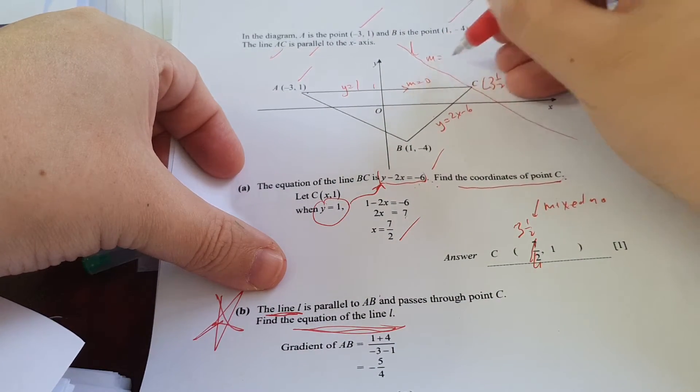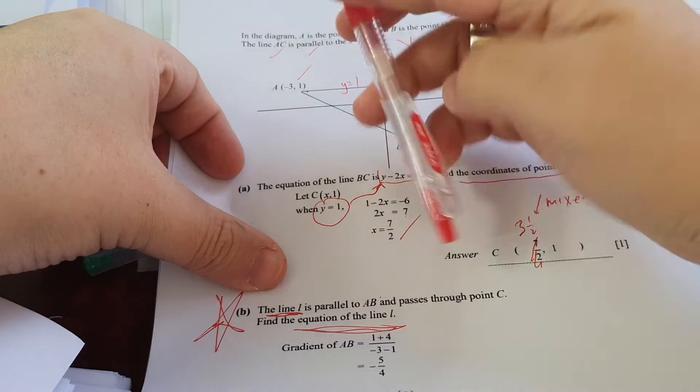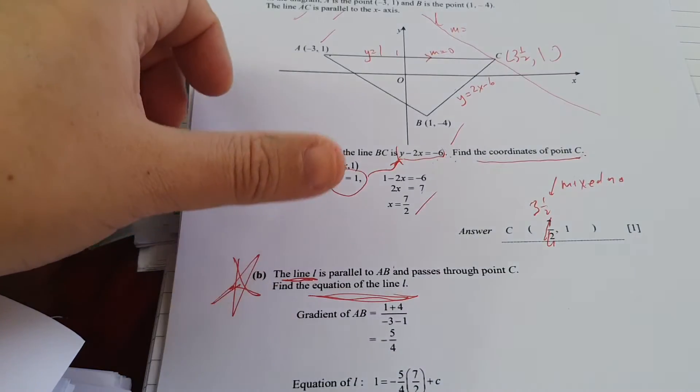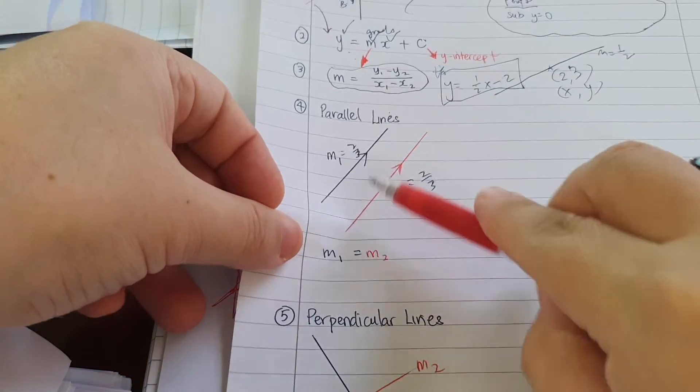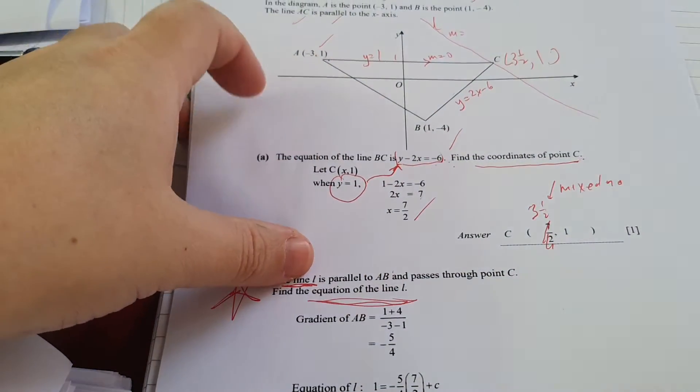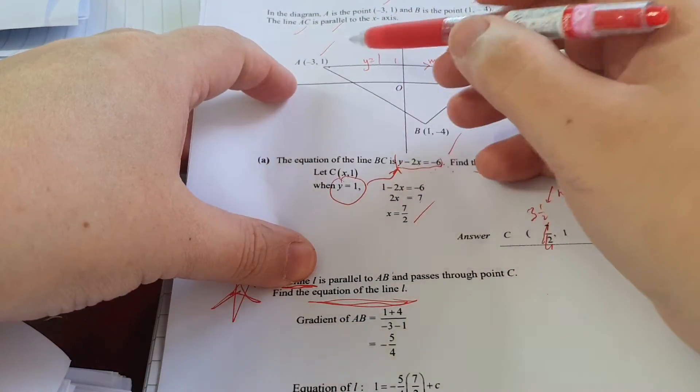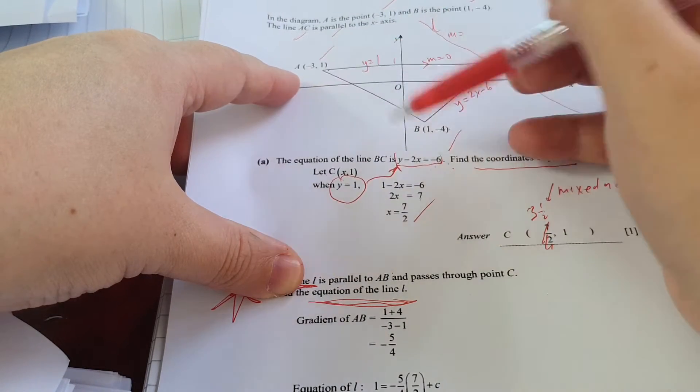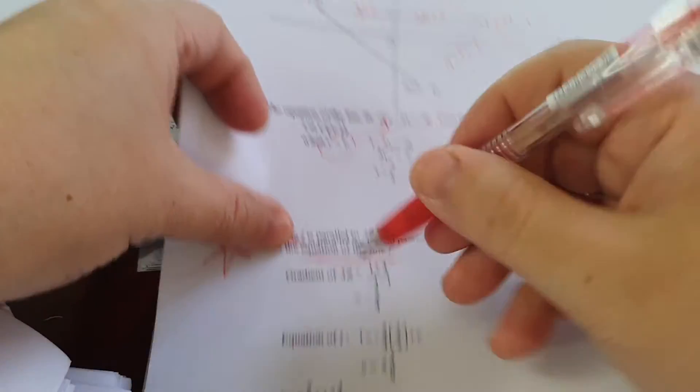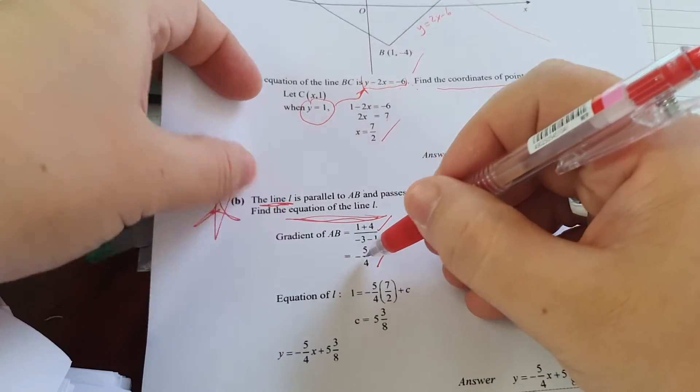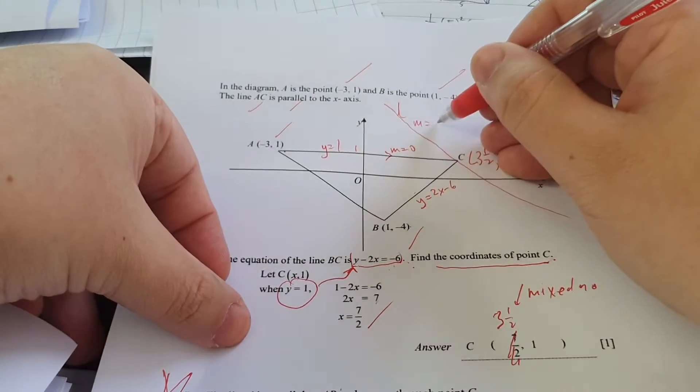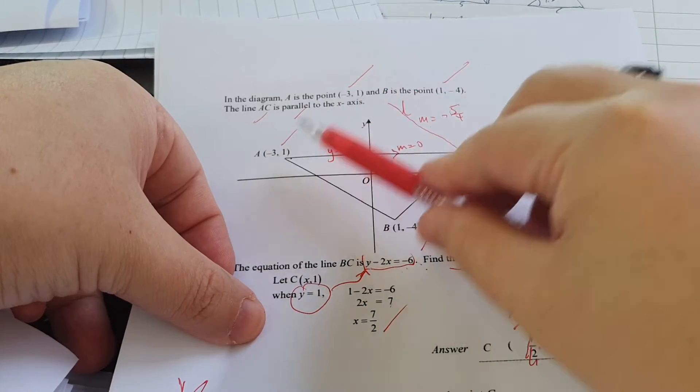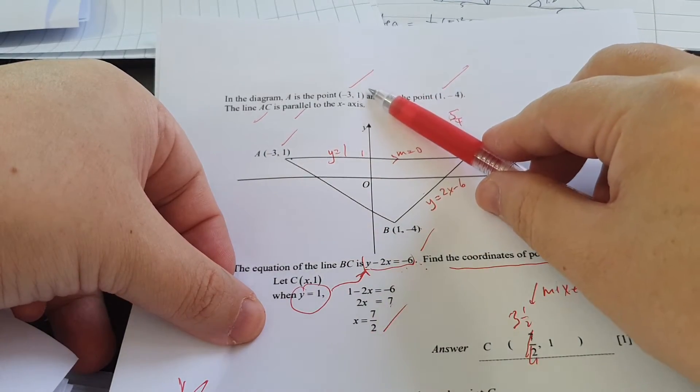Don't you agree that M of this is same as the M of this? Gradient of this, same as the gradient of this. That was what we just revised. Parallel lines have the same gradient. So you need to find the gradient of this line. How to find gradient of this line? Y, this Y minus this Y, divided by this X minus this X. That's all, very simple.